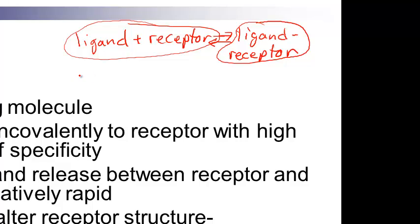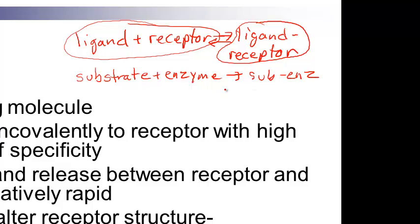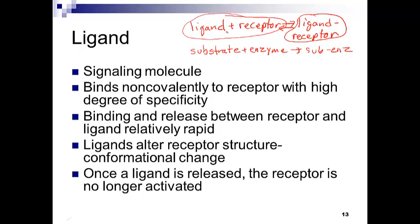This is not very different from what we've already learned. We have a substrate that bound to an enzyme to form a substrate-enzyme complex, and we know there was a certain degree of specificity there as well. As a result of ligand binding receptor, it forms a complex that initiates a change in protein structure. Any time you introduce a conformational change in a protein, you also introduce an altered function.